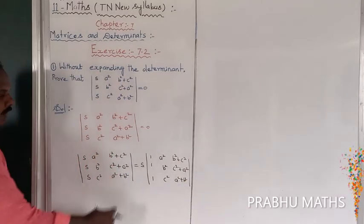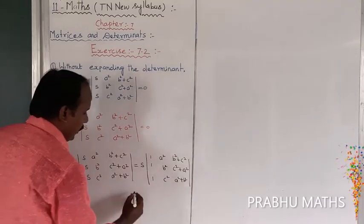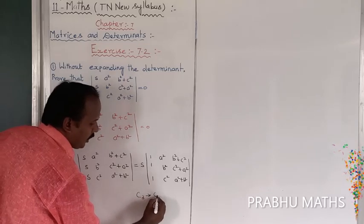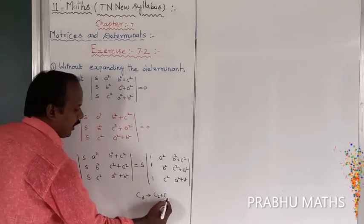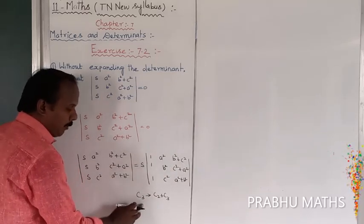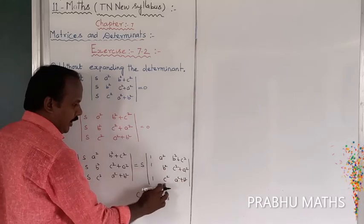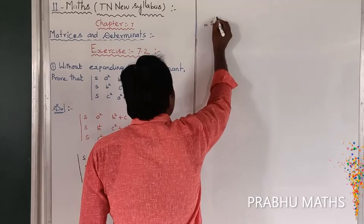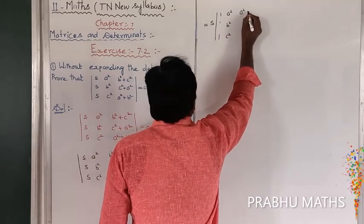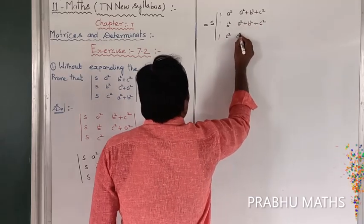Next, we apply the column operation C3 → C3 + C2 — that is, we add column 2 to column 3. After adding, the third column becomes: A²+B²+C², A²+B²+C², A²+B²+C². So the determinant equals S times the determinant with columns (1,1,1), (A², B², C²), (A²+B²+C², A²+B²+C², A²+B²+C²).